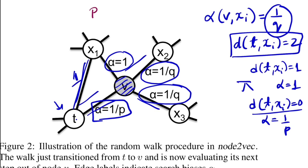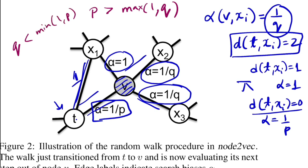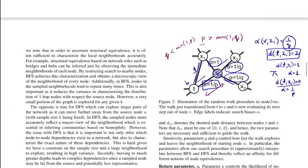If p is greater than max(1, q), the alpha for returning to t is very small, so the chance of going back is low — promoting depth-first exploration. Similarly, if q is less than min(1, p), the edge weights to x2 and x3 become relatively higher, also promoting depth-first exploration. These are the intuitions for selecting p and q to control DFS versus BFS behavior.